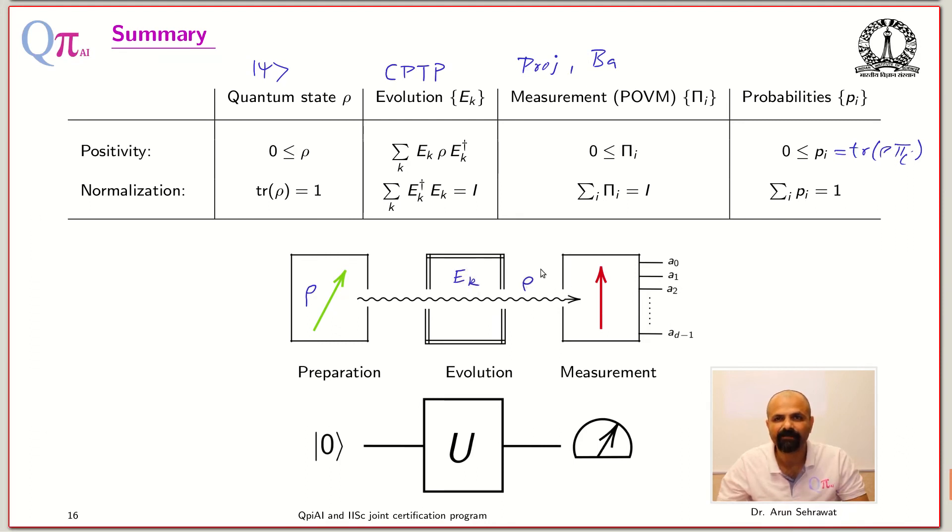This ρ prime is your evolved state and this Π_i is your measurement operators and this p_i is your probability. If you are calculating this p_i from evolved state, there will be ρ prime.